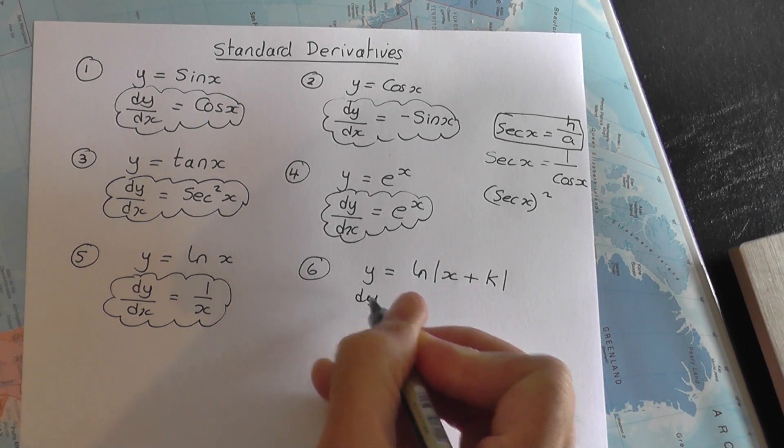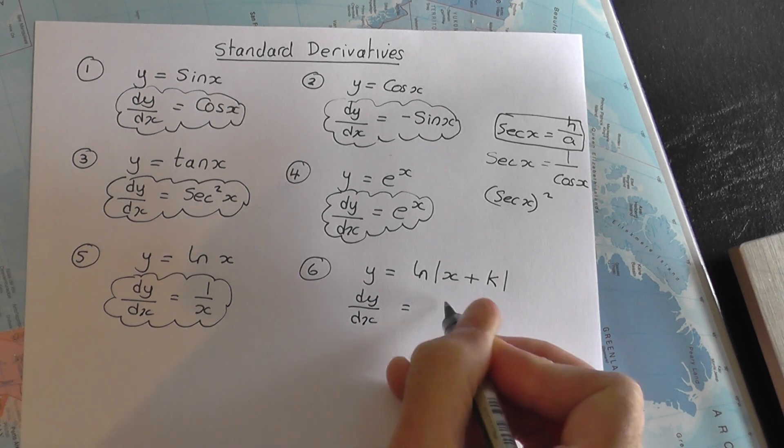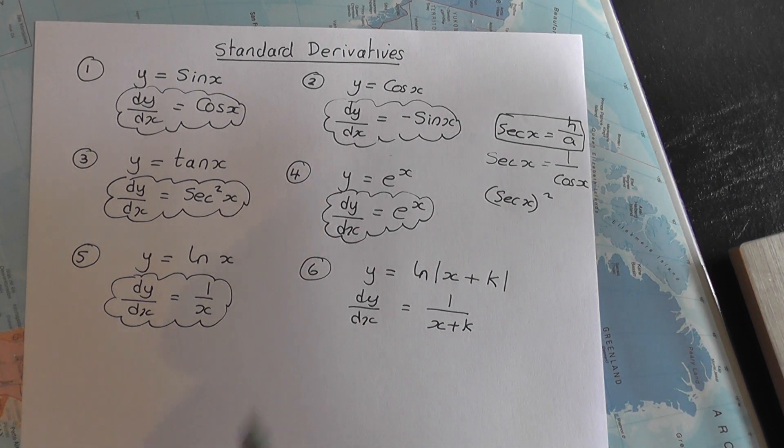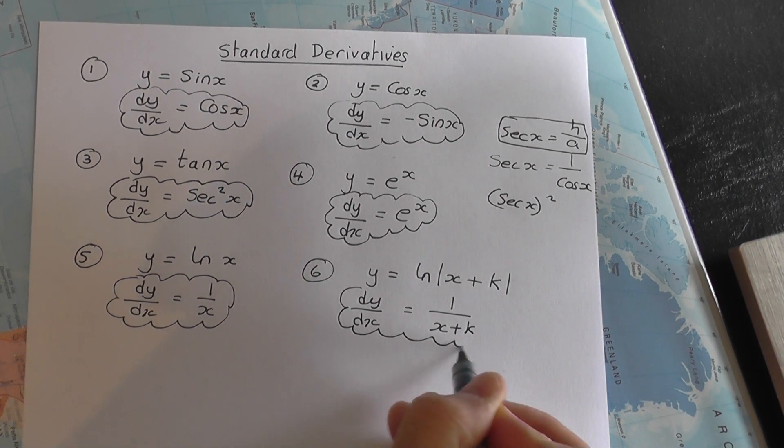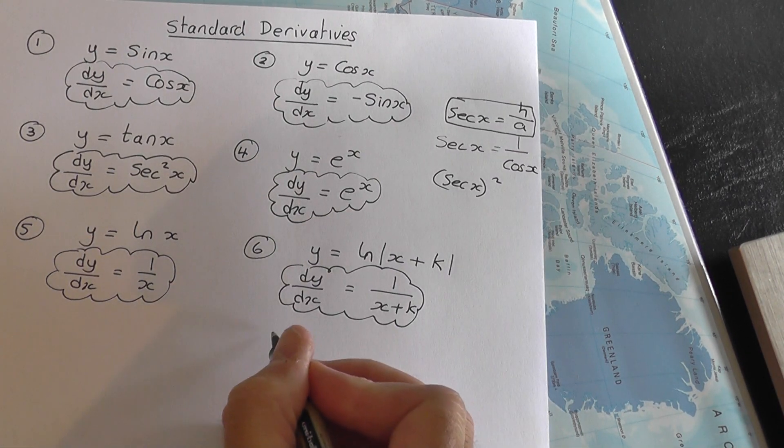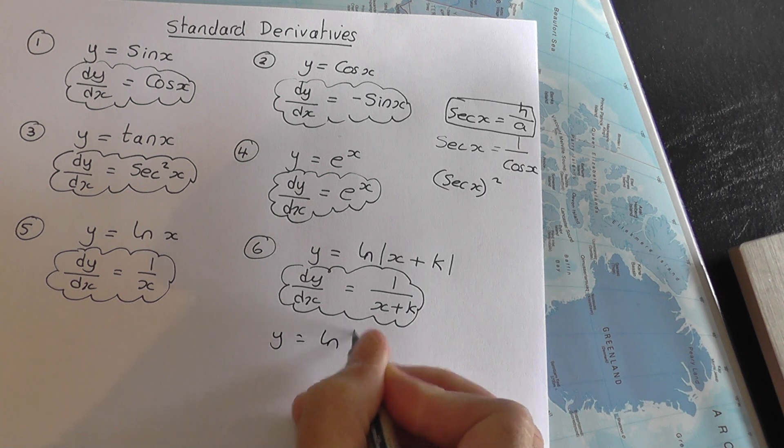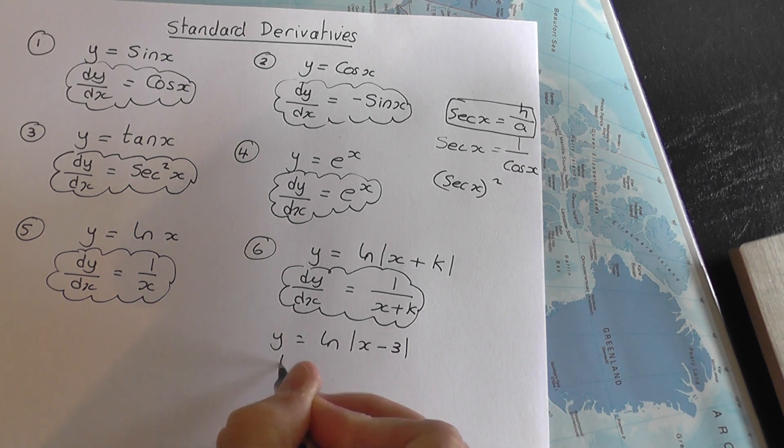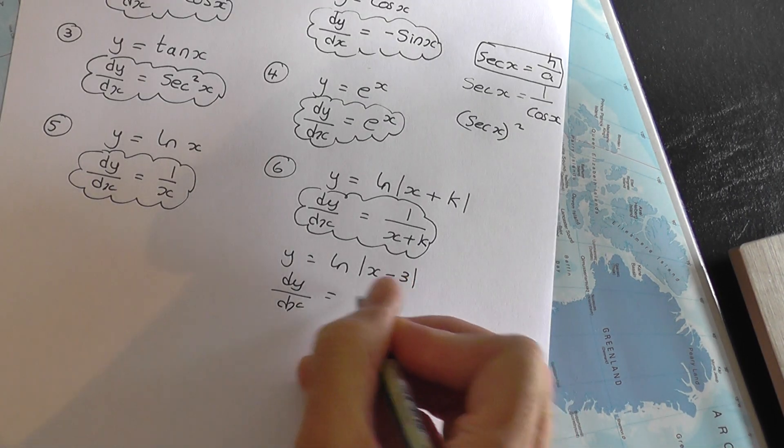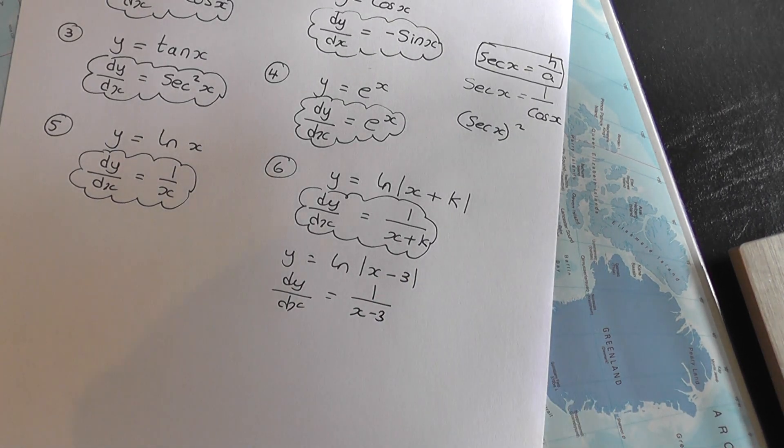And dy by dx will simply be 1 over the thing inside those modulus signs. That is a standard result you learn off by heart. So in this final one, for example, if I gave you y equals log to base e of x minus 3, then dy by dx will be equal to just 1 over x minus 3. And it's as simple as that.